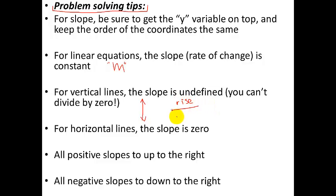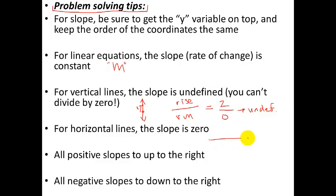When you look at rise over run for a vertical line, if you pick two points, there is definitely a rise — maybe it goes up two. But how far over did it go? It didn't go over at all. Because you have a zero in the denominator, that's how we get undefined slope. For horizontal lines, the slope is zero. If your line goes side to side, your rise is zero — you didn't go up at all, just forward. So zero over five, for example, is zero. Remember: a zero in the denominator means undefined slope and a vertical line; a zero in the numerator means your slope is zero and you have a horizontal line.